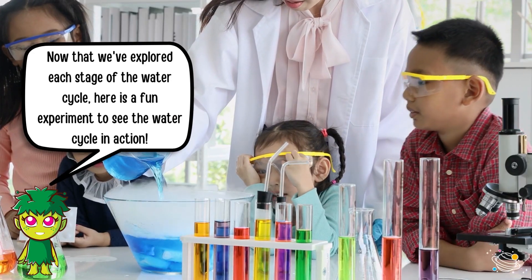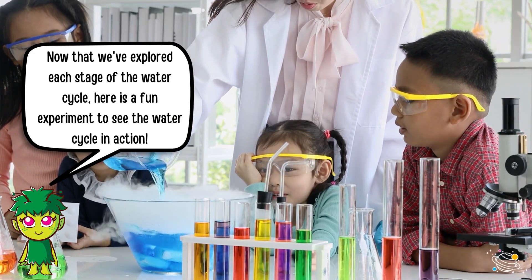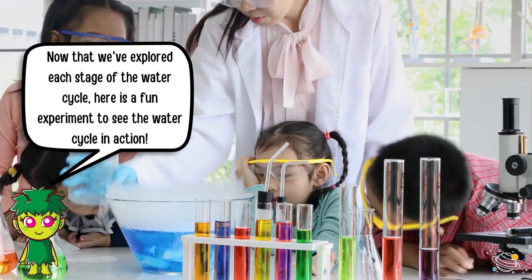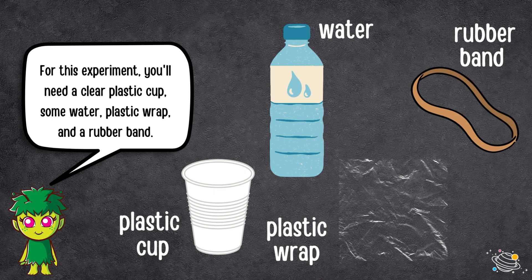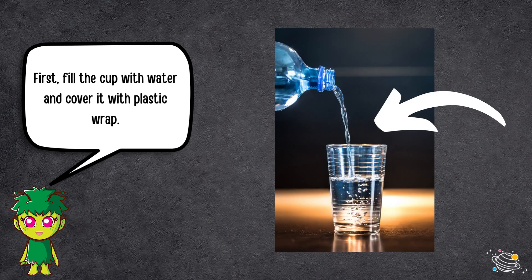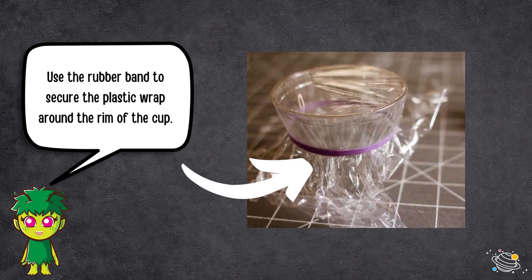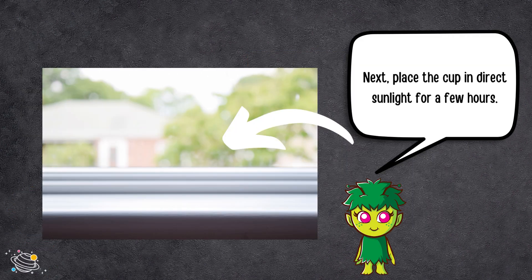Now that we've explored each stage of the water cycle, here is a fun experiment to see the water cycle in action. For this experiment you'll need a clear plastic cup, some water, plastic wrap, and a rubber band. First, fill the cup with water and cover it with plastic wrap. Use the rubber band to secure the plastic wrap around the rim of the cup.